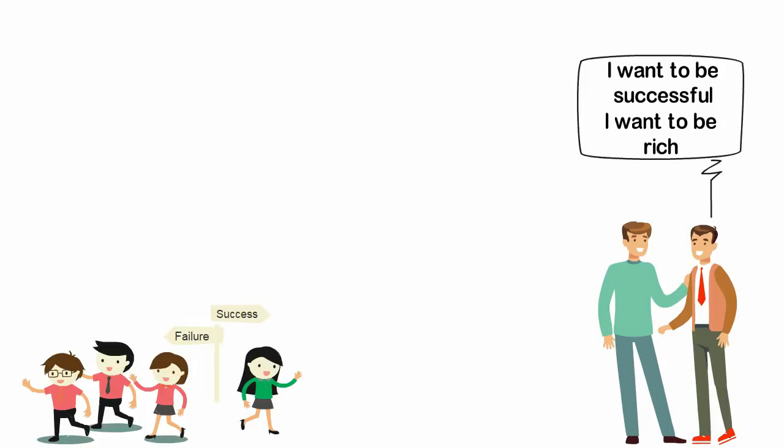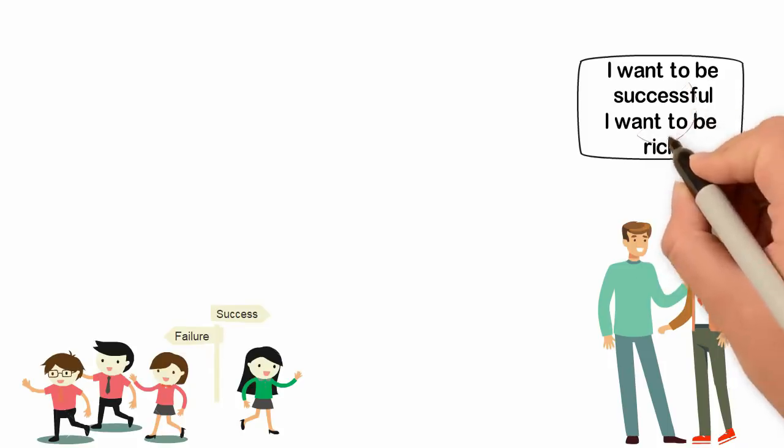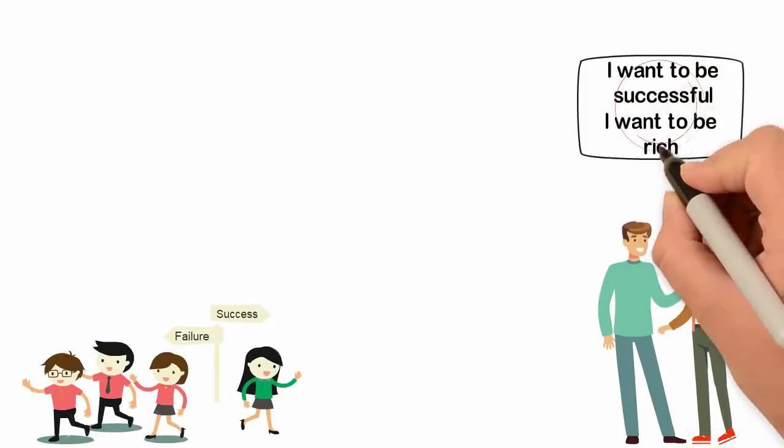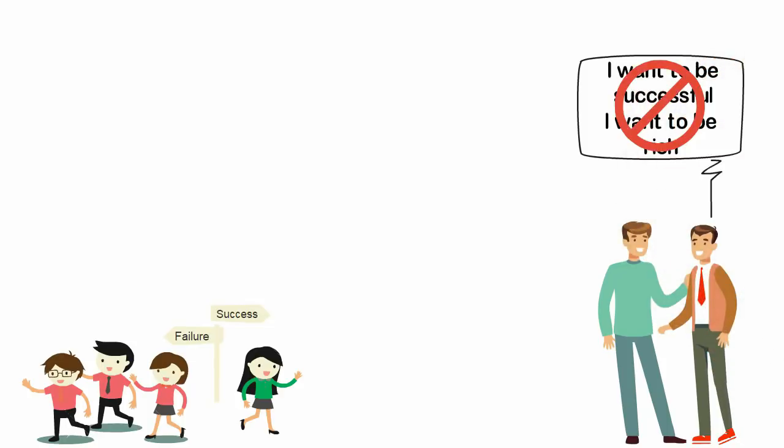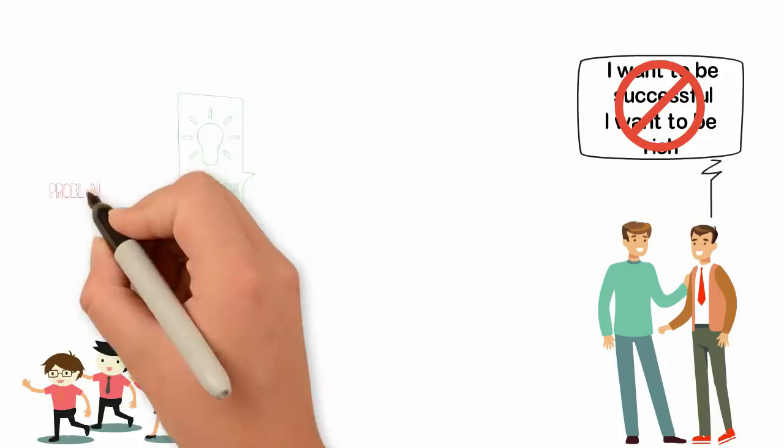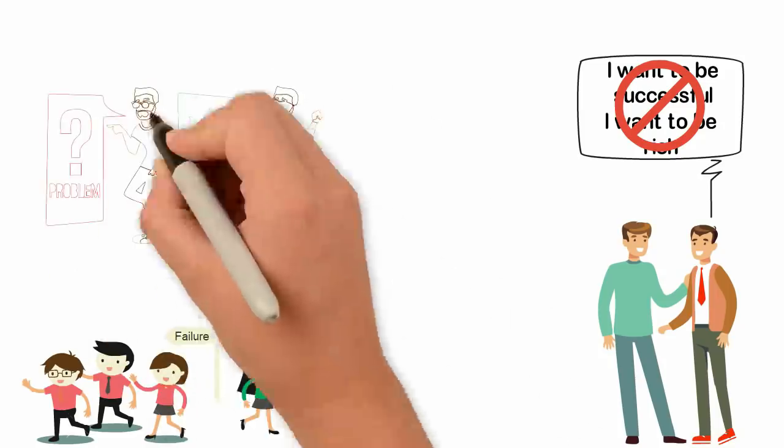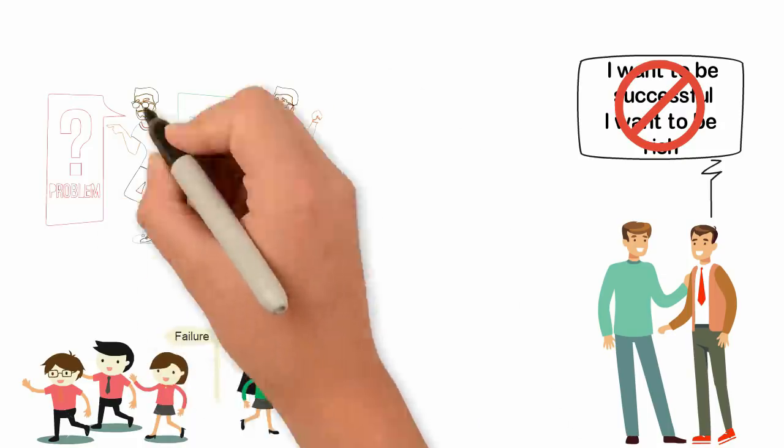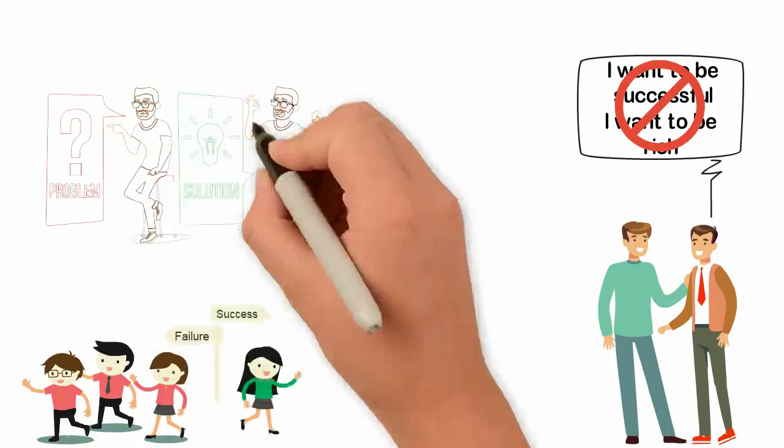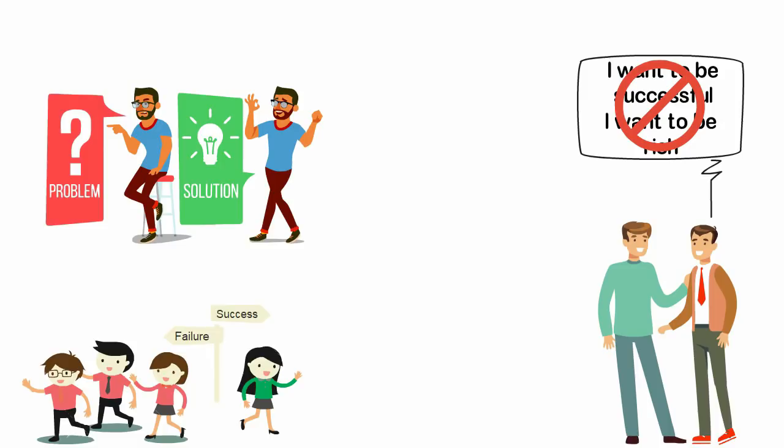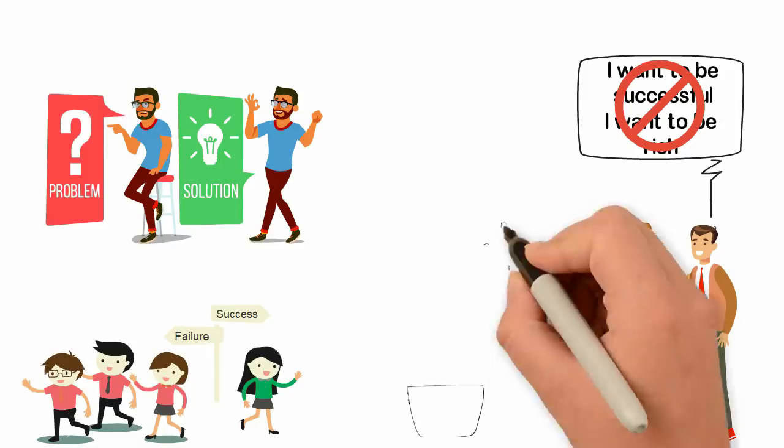To be successful in life, you must be specific about what you wish to achieve with your life. Don't tell me that you want to be successful, that's crap. Don't tell me that you want to be rich, that's nothing. Tell me the specific things you will do to be rich. Tell me a specific problem you will solve to make the money. Tell me the specific amount you want to make at a specific date in the future. Tell me specifics, don't tell me wishes.